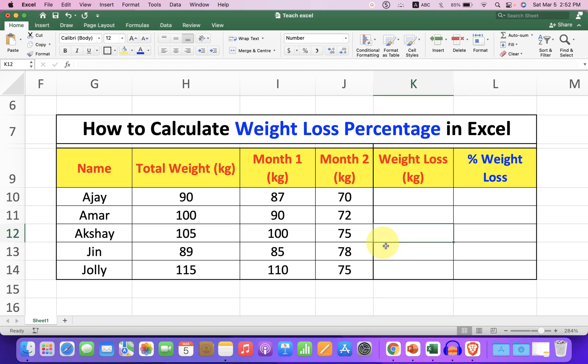To calculate weight loss, first enter the total weight in the first column. In the next column, record the weight that was after one month.